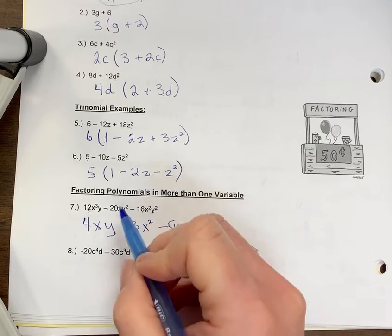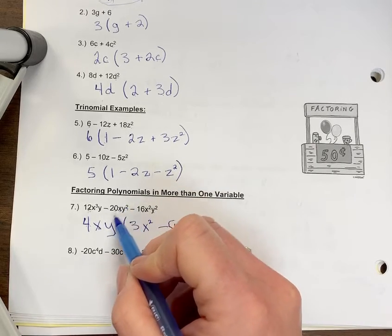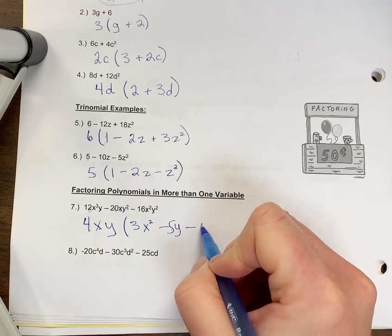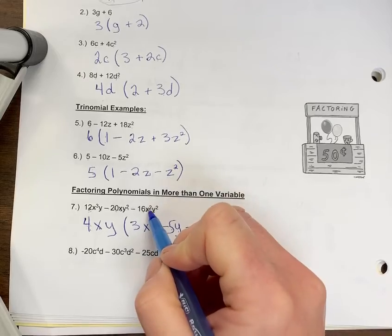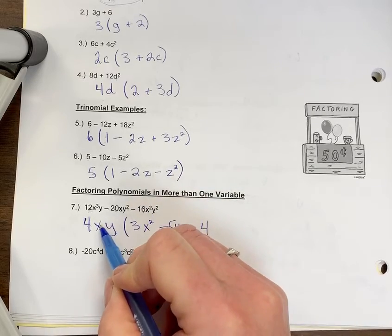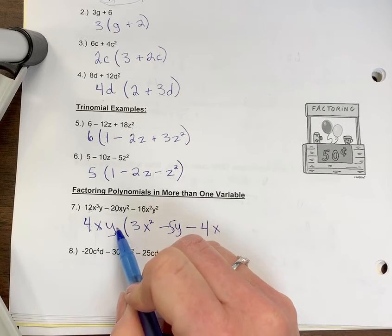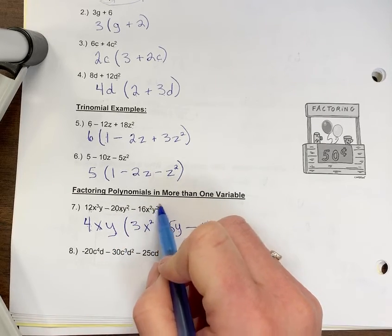So we have - I should have done that first - so 20 divided by 4 is negative 5. Then I look, I don't have any x's. Y squared divided by y. Minus 16 divided by 4 is 4. I have x squared and an x, so I've taken one out, one remains. For y, I have y and then I have y squared. I've taken one out, so one remains.